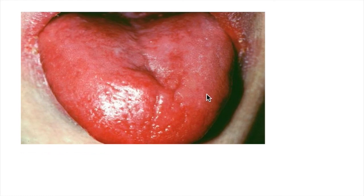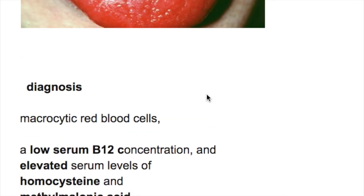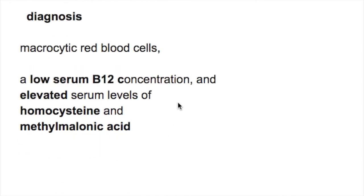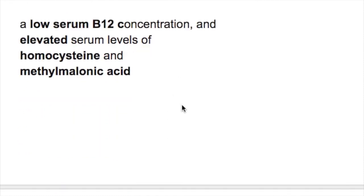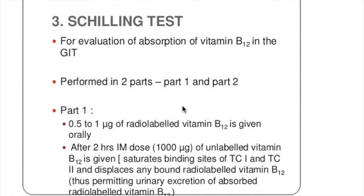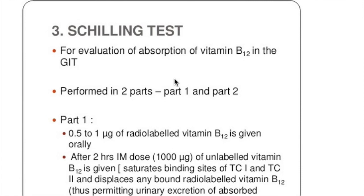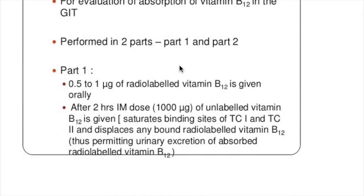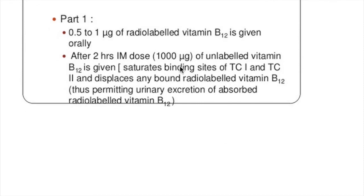Diagnosis of B12 deficiency: the simplest test is measuring serum B12. There are macrocytic red blood cells and elevated serum levels of homocysteine and methylmalonic acid. The Schilling test evaluates absorption of vitamin B12 in the GI tract and is done in two parts: first, radiolabeled oral B12 is given, then two hours later intramuscular vitamin B12 is given to displace the radiolabeled B12, which is then measured in the urine.